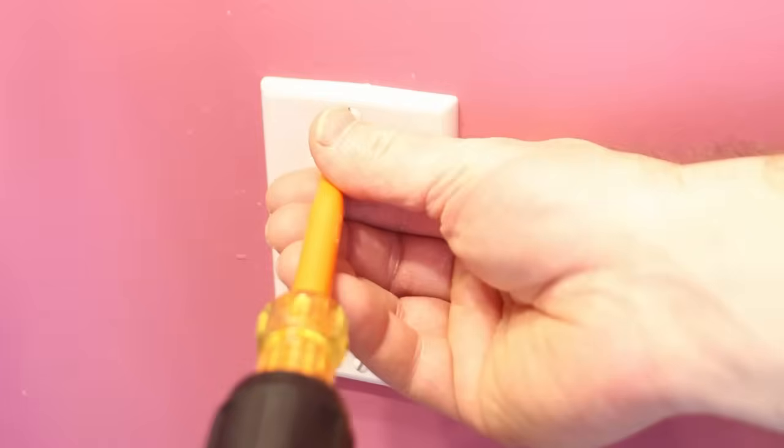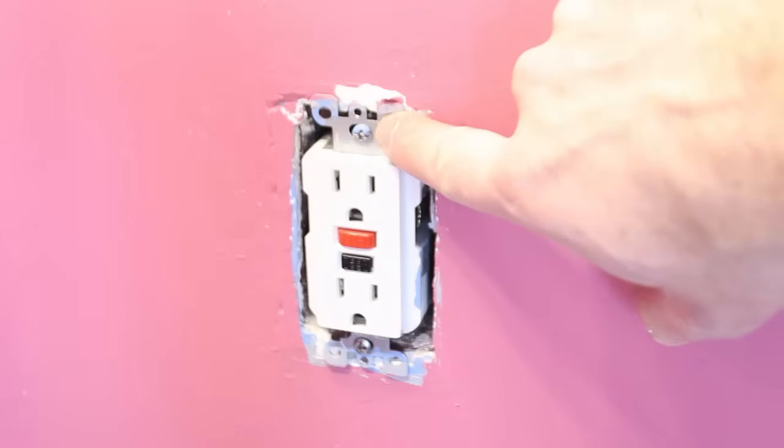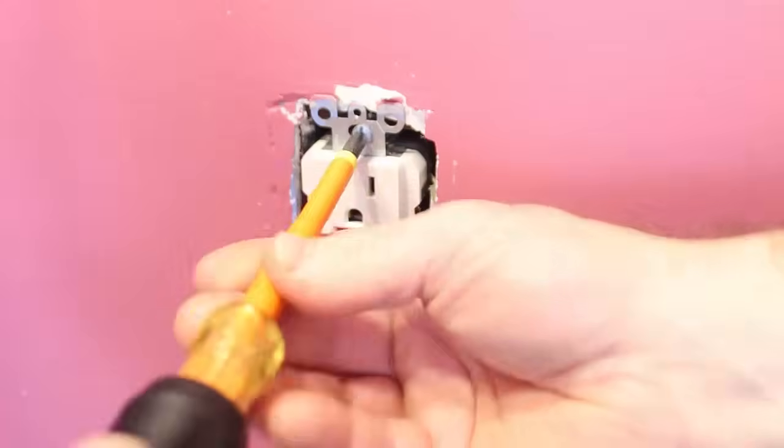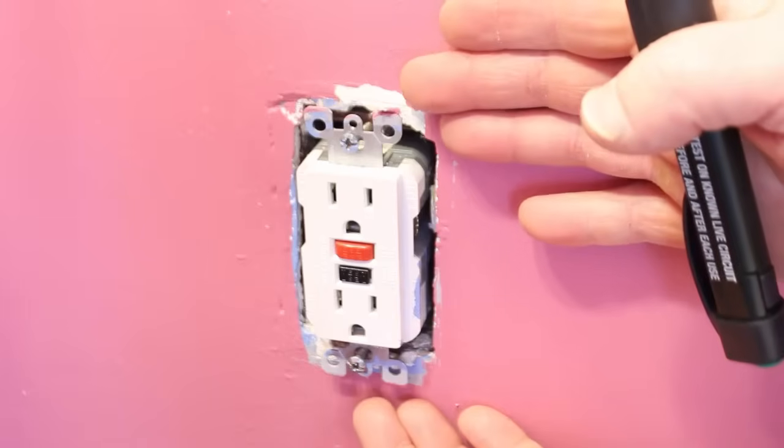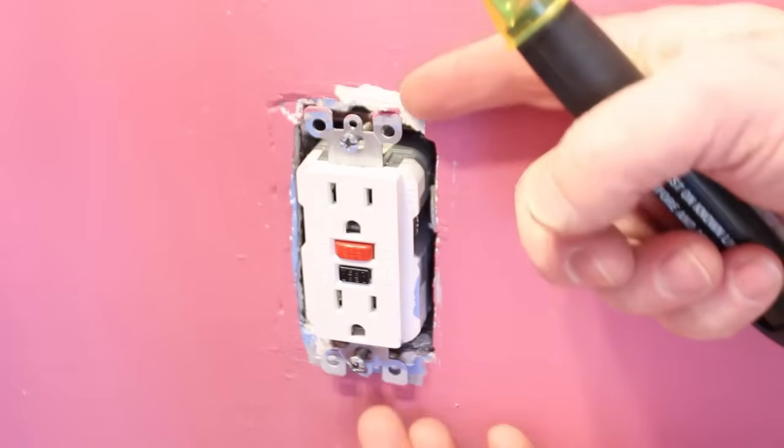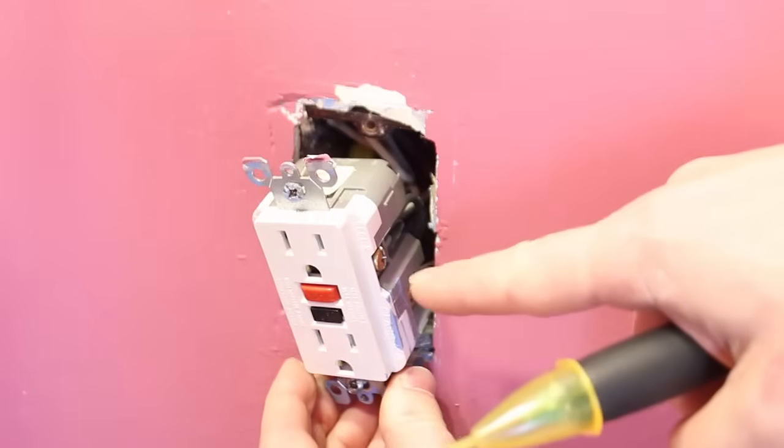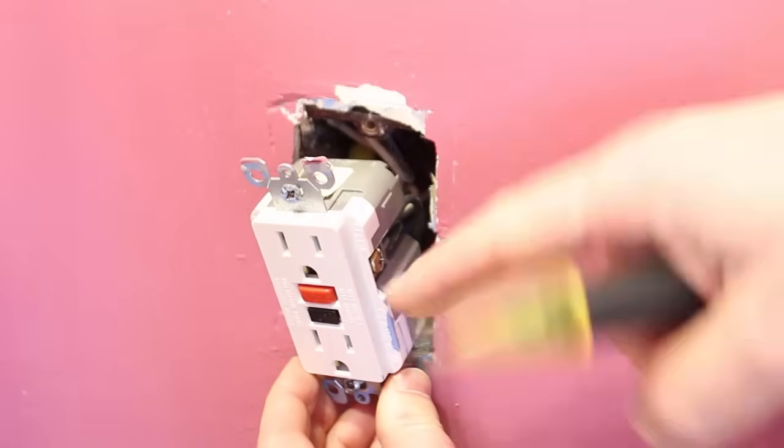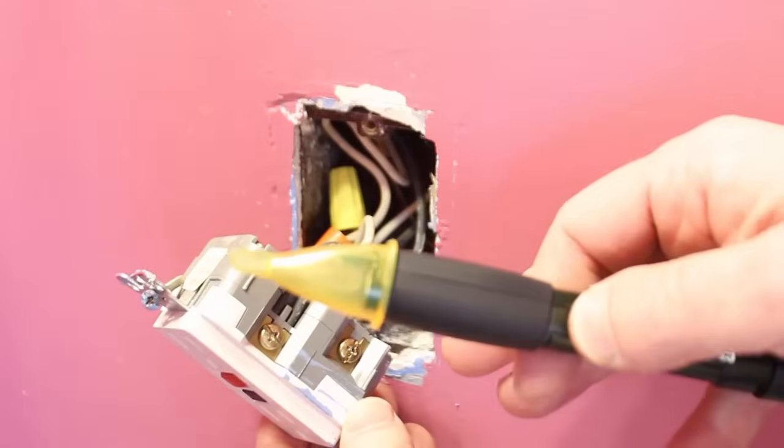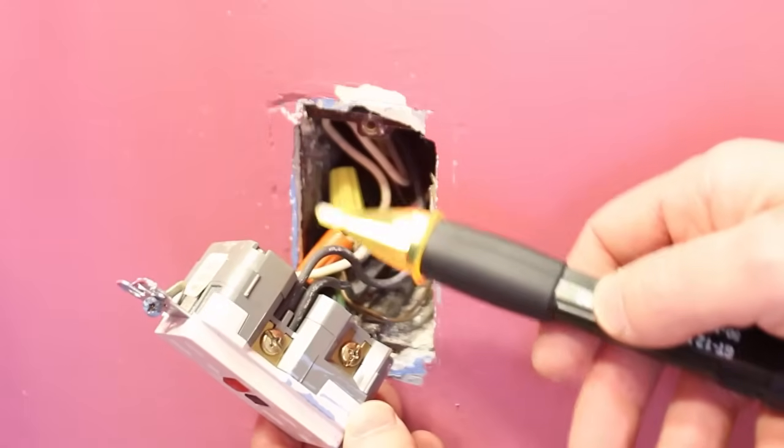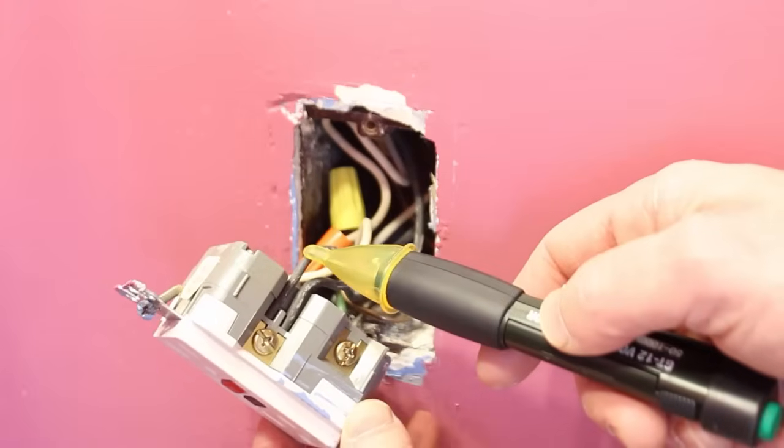Just turn them counterclockwise. Now you can remove the screws that hold the outlet to the electrical box. Again, turn the screws counterclockwise. Now pull the outlet out from the electrical box using the metal tabs. Make sure not to touch the side of the outlet, just in case it's still energized. With your voltage detector, double-check that there's no electricity running to the outlet by placing it on top of the hot wires.